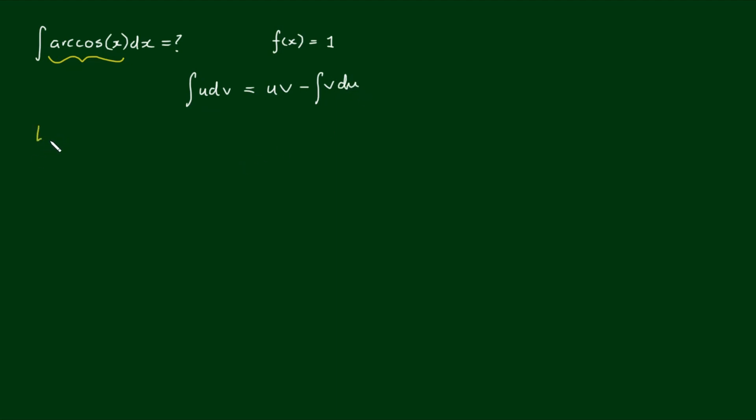So in this case, let's let u(x) equal the inverse, or the arc cosine of x. So that's u, and let's let dv equal dx.